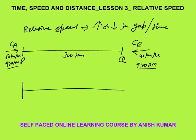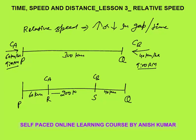After 1 hour, what will happen? Car A will cover a distance of 60 km because Car A's speed is 60 km per hour. Car B will cover 40 km. Let's say Car A's new position is point R and Car B's is point S. Car A covered 60 km and Car B covered 40 km. The gap remaining now is 200 km.